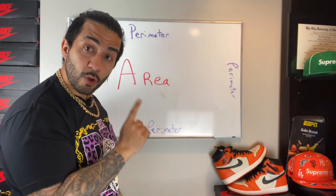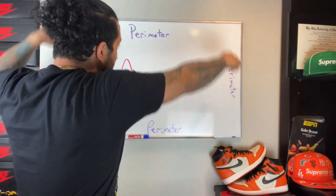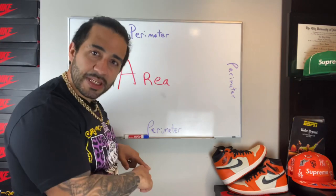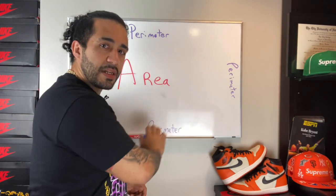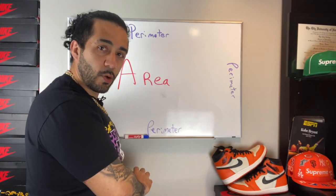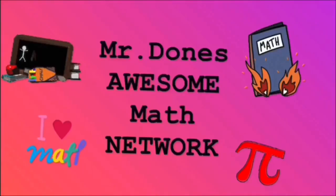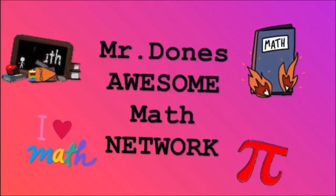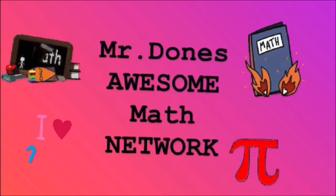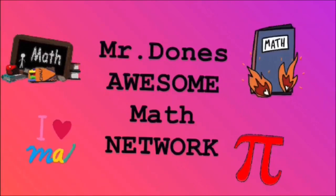So, just to do a recap: the perimeter — outside. The area — the inside, where the boys must play. Mr. Donuts Awesome Map Network — it's the Awesome Map Network, yeah.